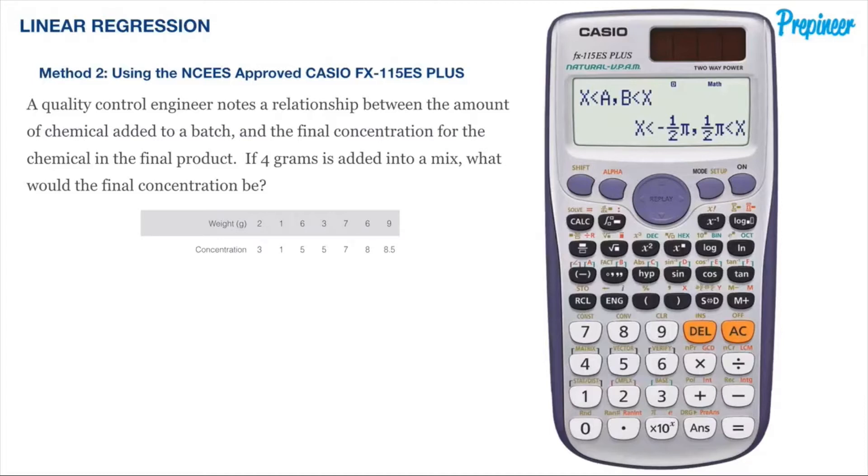Instead it's giving us a value of a chemical being added and asking us to determine what the concentration would be. Remember the linear regression line helps us relate a cause and effect relationship within the data that is presented to us, where the independent variable is the cause and the dependent variable is the effect. In this problem, the amount of chemical added is the independent variable and the concentration is the dependent variable.